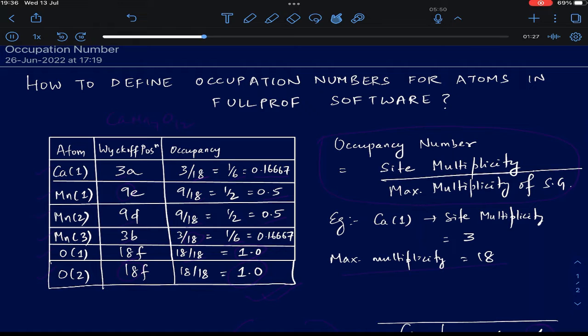In this compound given by the formula CaMn7O12, you have one kind of calcium atom, then you have two types of Mn atoms. Why two types? Because the crystallographic environment around each of these Mn atoms is different, hence they are written as Mn1 and Mn2. There is also a third type of Mn ion given by Mn3 which is sitting at another Wyckoff position.